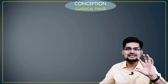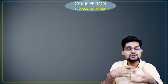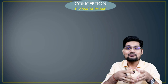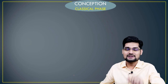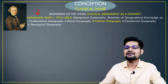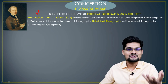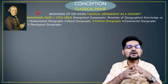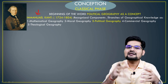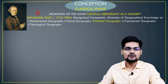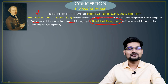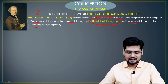Now comes the classical phase, where concepts start to build with scholarship — though the subject was still not introduced in the university system. Scholars like Immanuel Kant mark the beginning of actual political geography conceptualizations built on earlier knowledge. Kant divided geography into sub-parts: mathematical geography, moral geography, political geography, and commercial and theological geography.